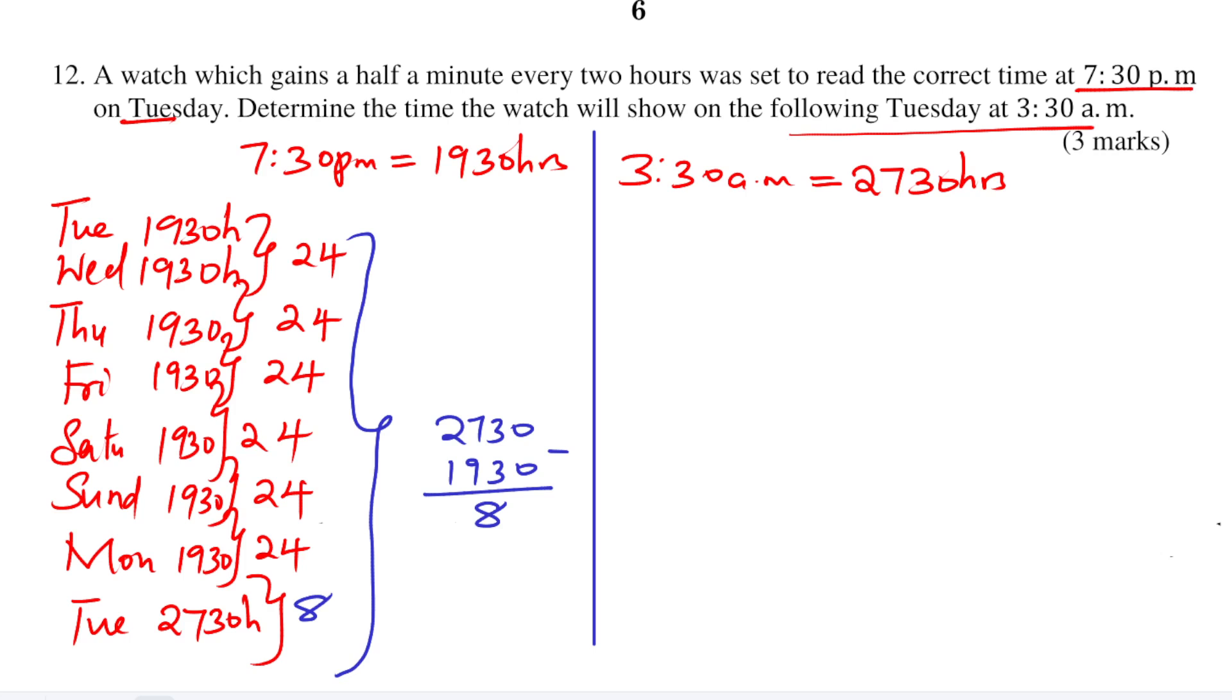So total time will be given by Tuesday 19:30 24 hours, Wednesday 19:30 24 hours, and so on. So these are the total number of hours. Total hours will be given by 24 times 6, and then we add 8. So this will give 152 hours. So this is the total time.